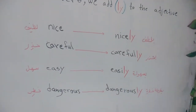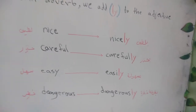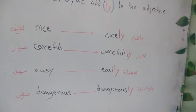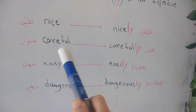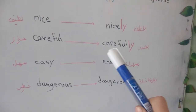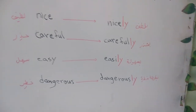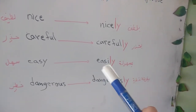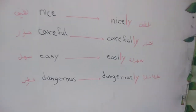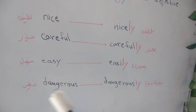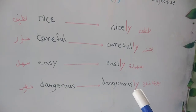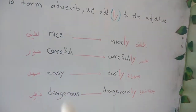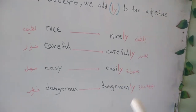Look at the examples: nice معناها لطيف — هي adjective. ضفت لها الـ y صارت nicely، بلطف — حولتها لـ adverb. careful معناها حذر — adjective. أضفت الـ y صارت carefully، بحذر. easy معناها سهل — أضفت الـ y صارت easily، بسهولة. dangerous معناها خطر — أضفت الـ y صارت dangerously، بطريقة خطيرة.